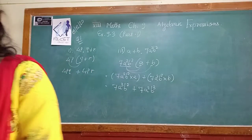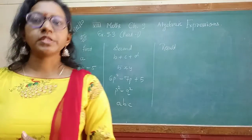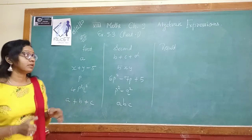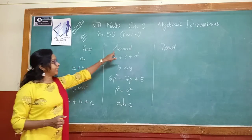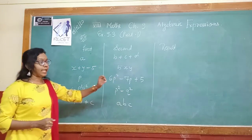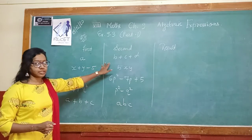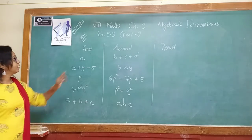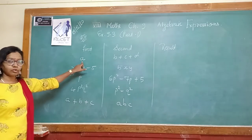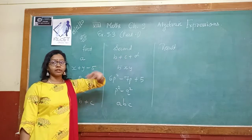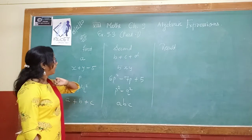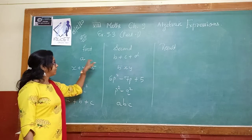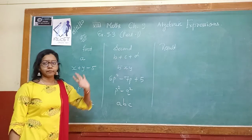Now move on to question number 2. In the second question you are given a table. The first expression is given, the second expression is given, and you have to multiply the first and second expressions to find the results. The first term is a — this is your monomial — and the second term is b + c + d, which has three terms and is your trinomial. So a multiplies with b, then a multiplies with c, and a multiplies with d, and everywhere the positive sign is there.